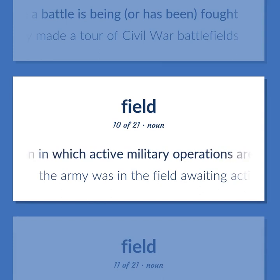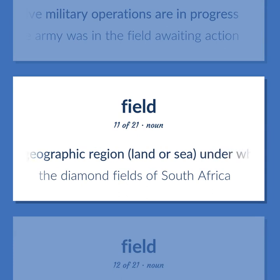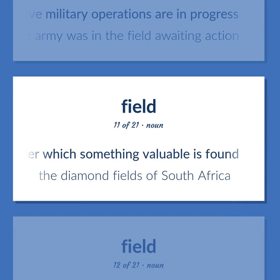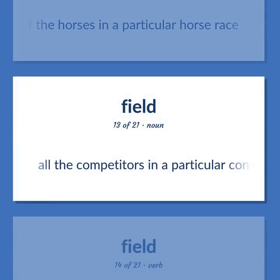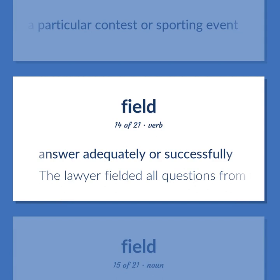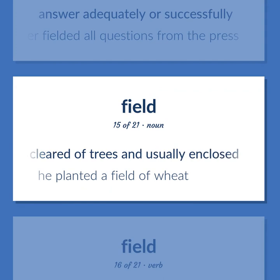Field: A region in which active military operations are in progress — the army was in the field awaiting action. A geographic region, land or sea, under which something valuable is found — the diamond fields of South Africa. All of the horses in a particular horse race. All the competitors in a particular contest or sporting event. To answer adequately or successfully — the lawyer fielded all questions from the press. A piece of land cleared of trees and usually enclosed — he planted a field of wheat.